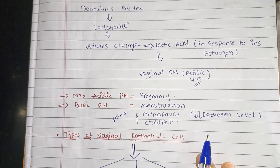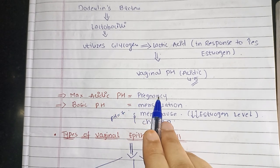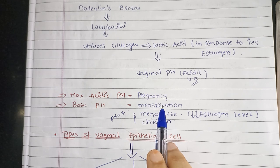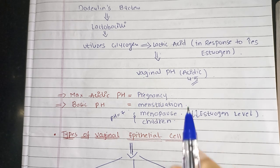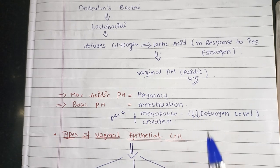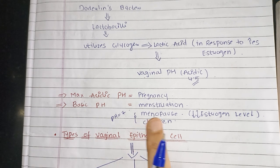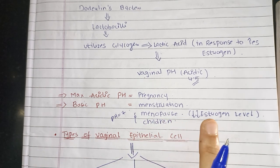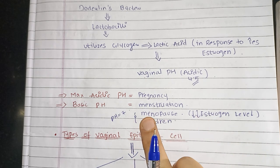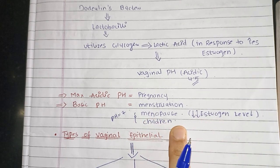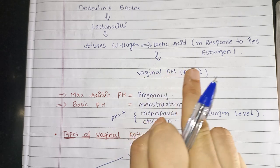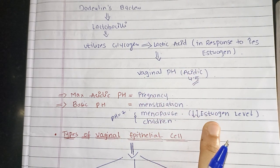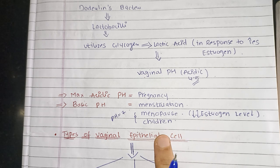The maximum acidic pH is seen during pregnancy. The basic pH is seen during menstruation, menopause, and in children. During menstruation, our blood pH is 7.4, so when the blood passes through the vagina it makes the vaginal pH basic as well. At menopause there is a decrease to zero estrogen level, so the bacilli do not convert glycogen into lactic acid under the influence of estrogen, and therefore the pH remains basic.